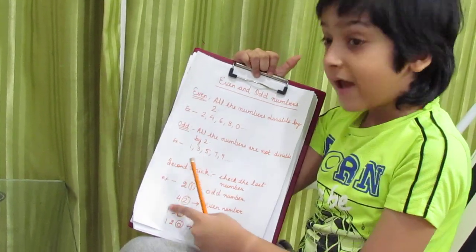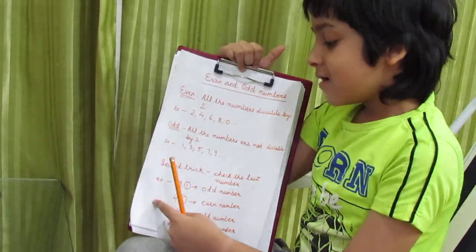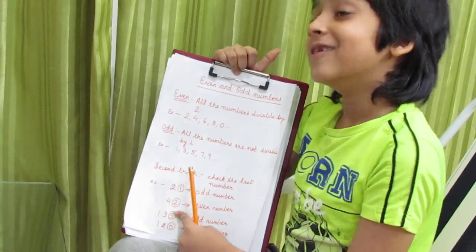135, 5 is an odd number. That means 135 is an odd number.